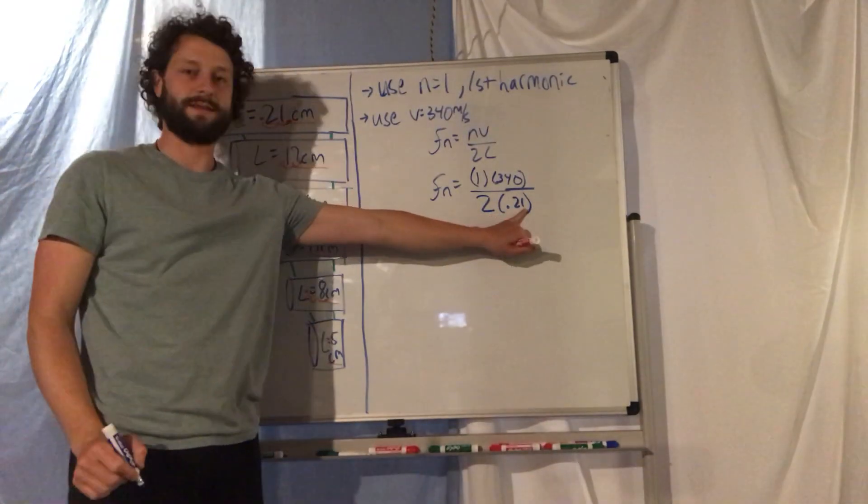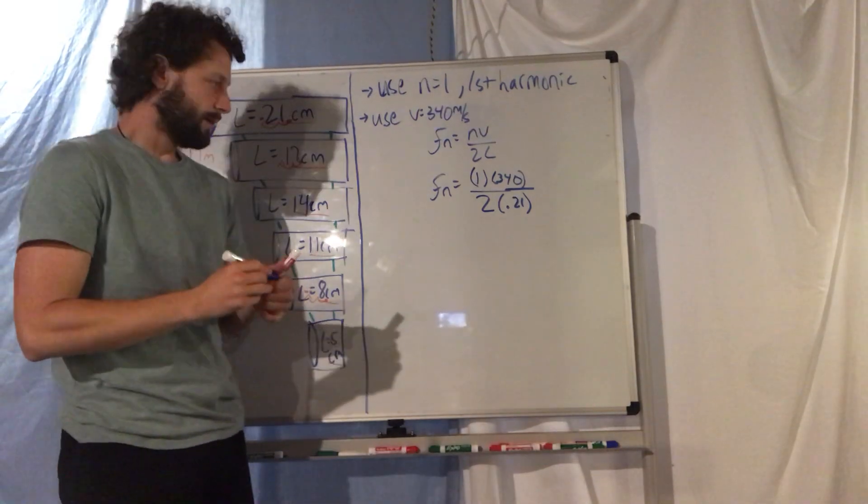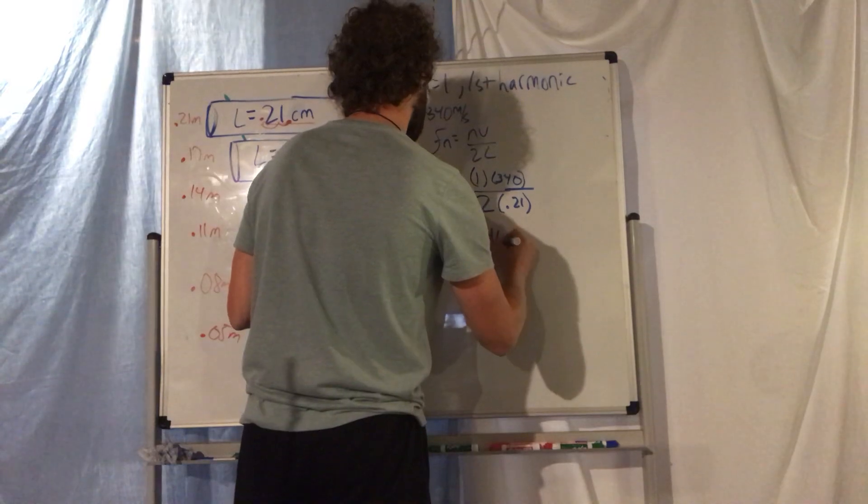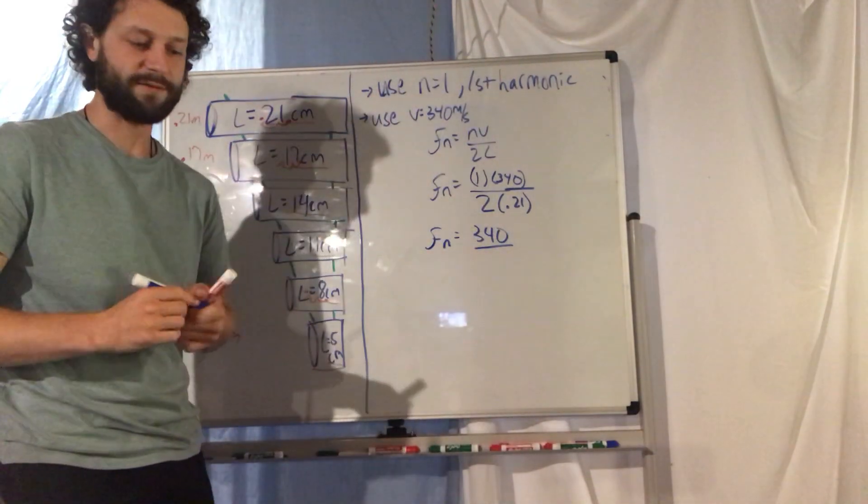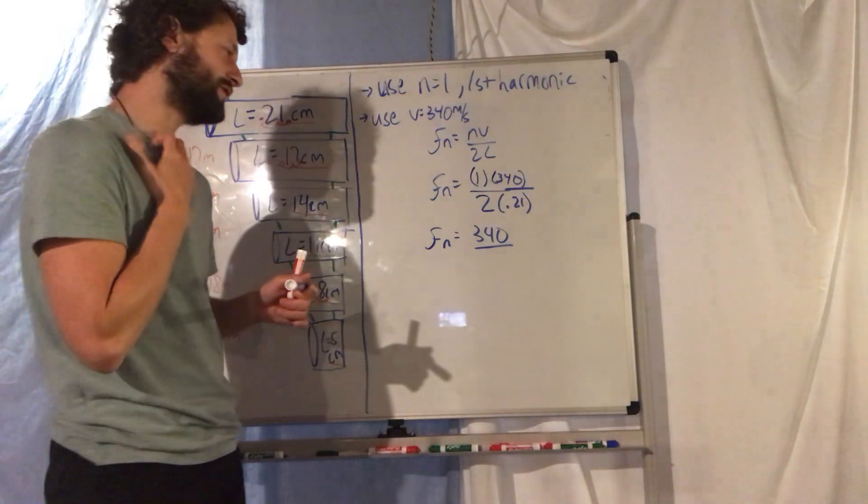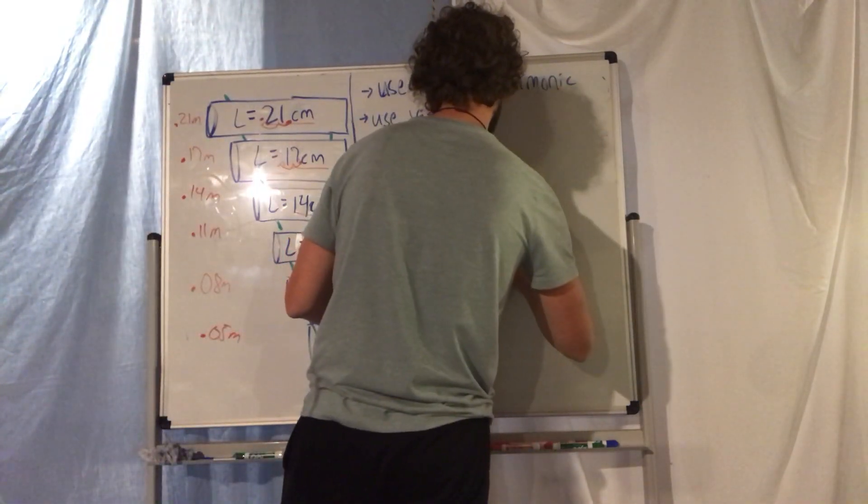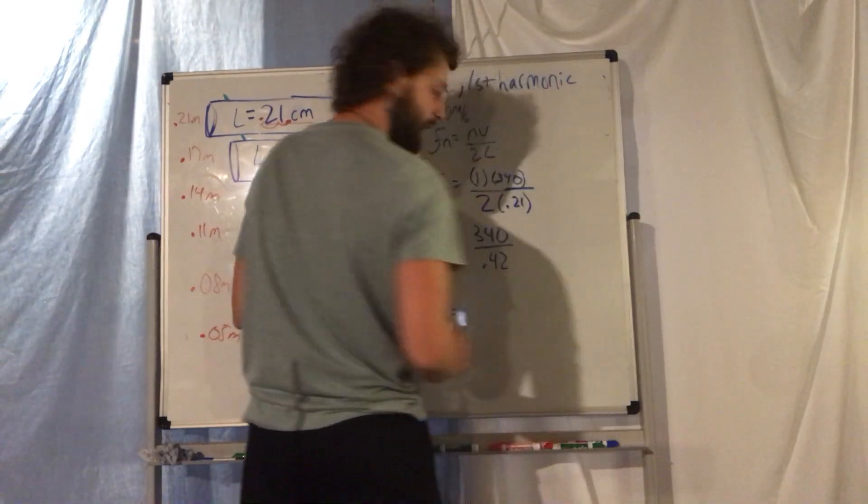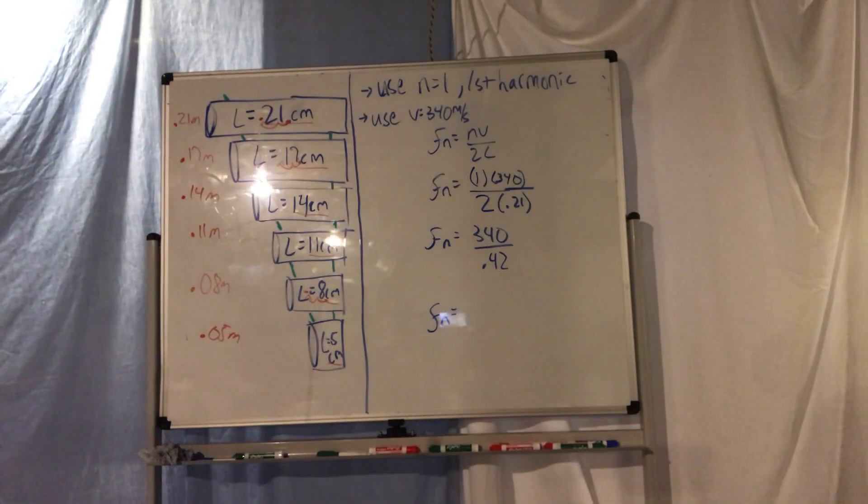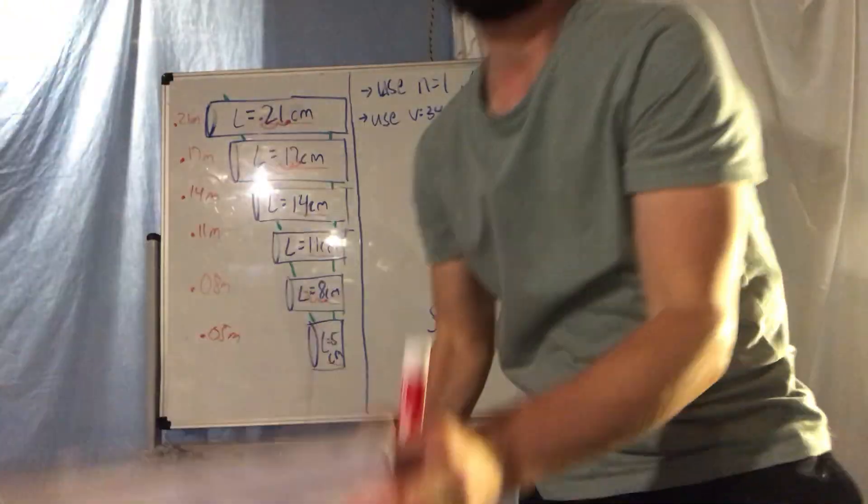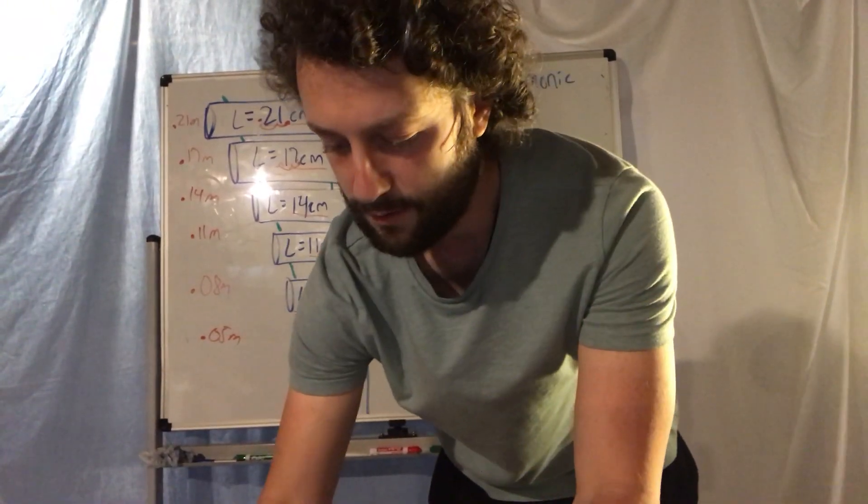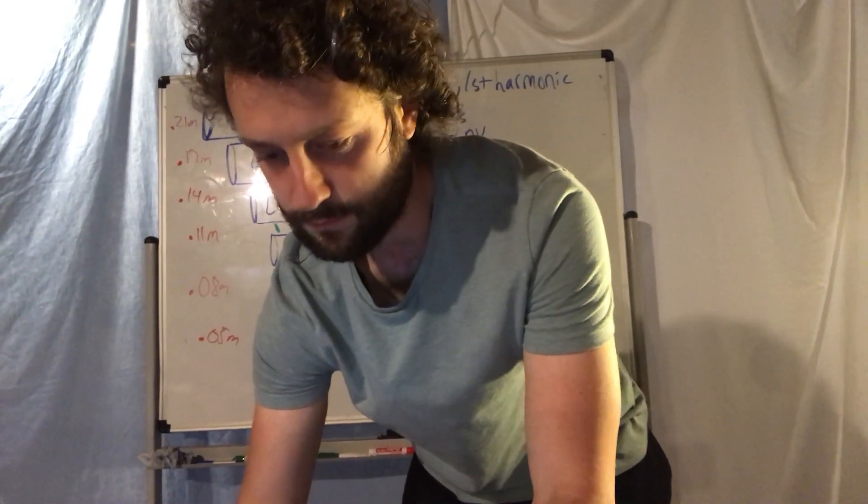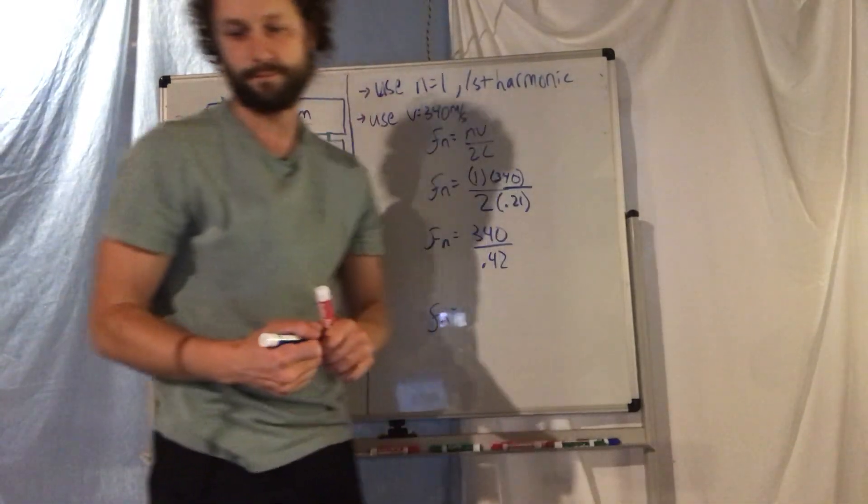I got to use the meters for length, not the centimeters. So 1 times 340 on top is always gonna get me 340, and you're gonna get probably a different number on the bottom. I have 2 times 0.21 which gets me 0.42.